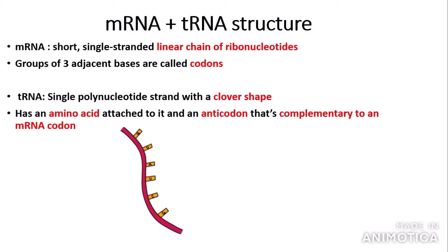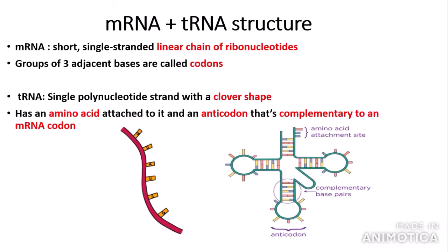The tRNA molecule also has what we call an anticodon, which is complementary to an mRNA codon — the importance of anticodons will become clearer when we talk about translation. Here we have the structure of tRNA: it's a clover shape, with an amino acid attachment site at the top and at the bottom the anticodon, which is a triplet of bases complementary to a specific mRNA codon.